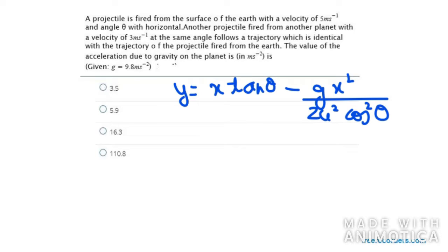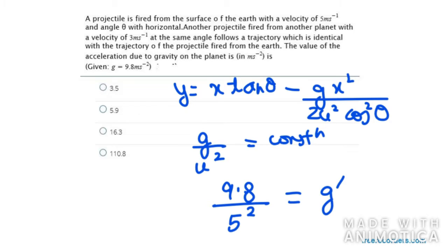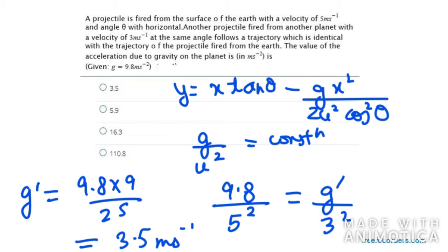The equation of trajectory is y equals x tan theta minus gx squared over 2u squared cos squared theta. Now as the question says that we have equal trajectories, that means g over u square is a constant value. So g on earth is 9.8 and u square is 5 square, and g dash is acceleration due to gravity on another planet, and this is 3 square. After using cross multiplication method you will get your answer as 3.5 meter per second square. So this is the first option.